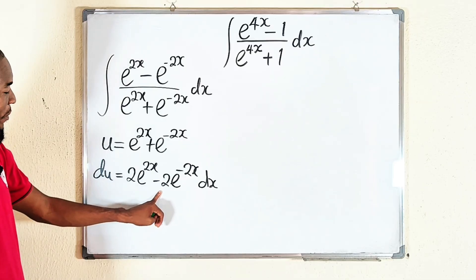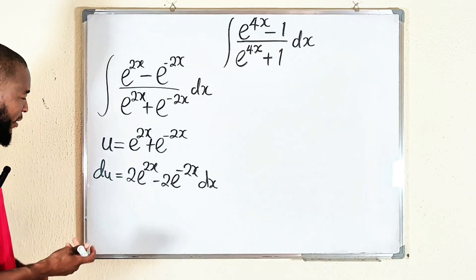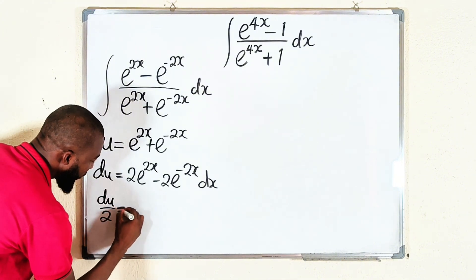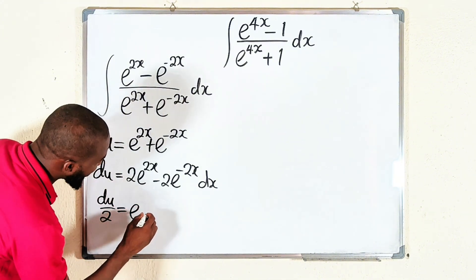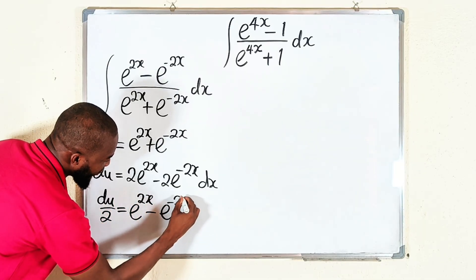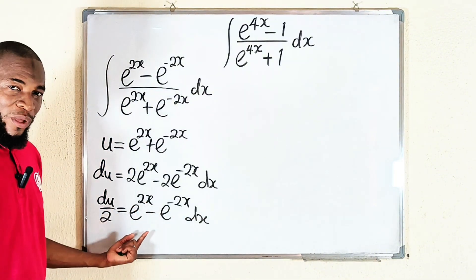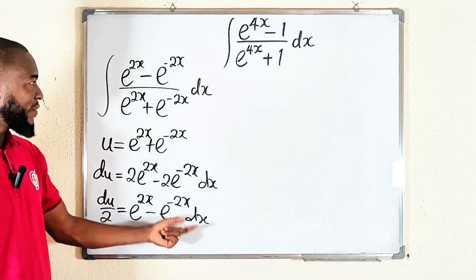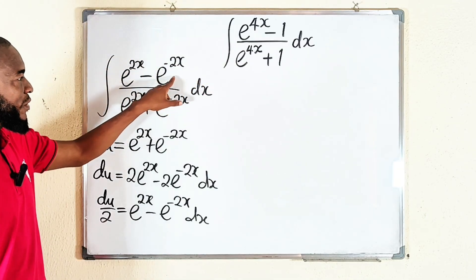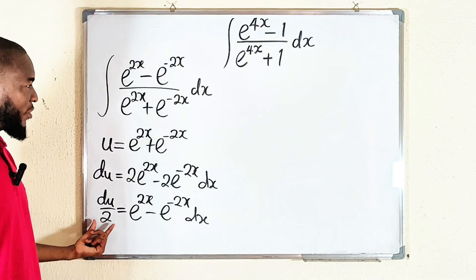You can see we have 2 in common, so we divide both sides by 2. This becomes du/2 = (e^(2x) minus e^(-2x)) dx. If you pay attention, e^(2x) minus e^(-2x) dx is exactly what we have in the numerator, so we can confidently replace it with just du.